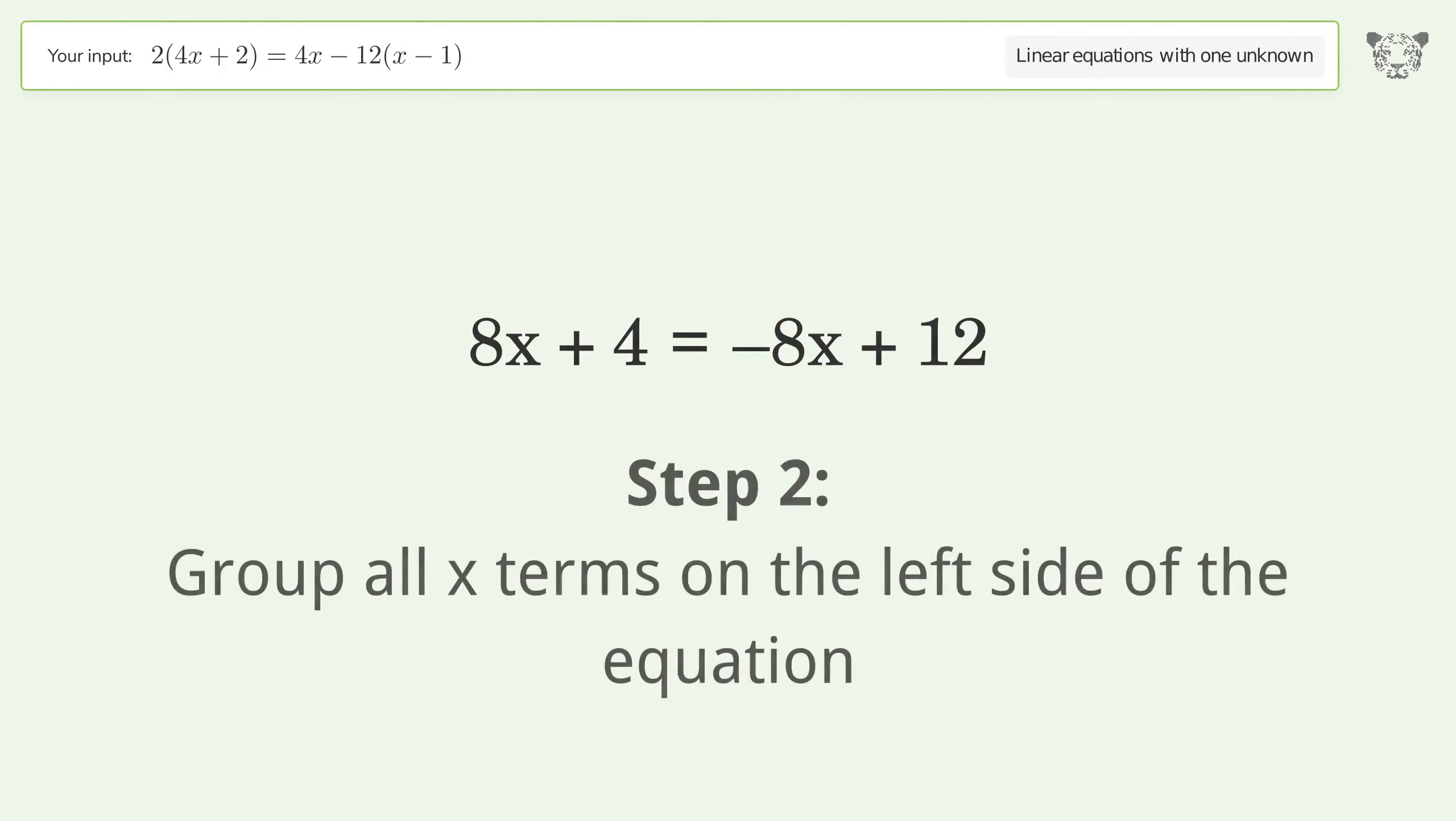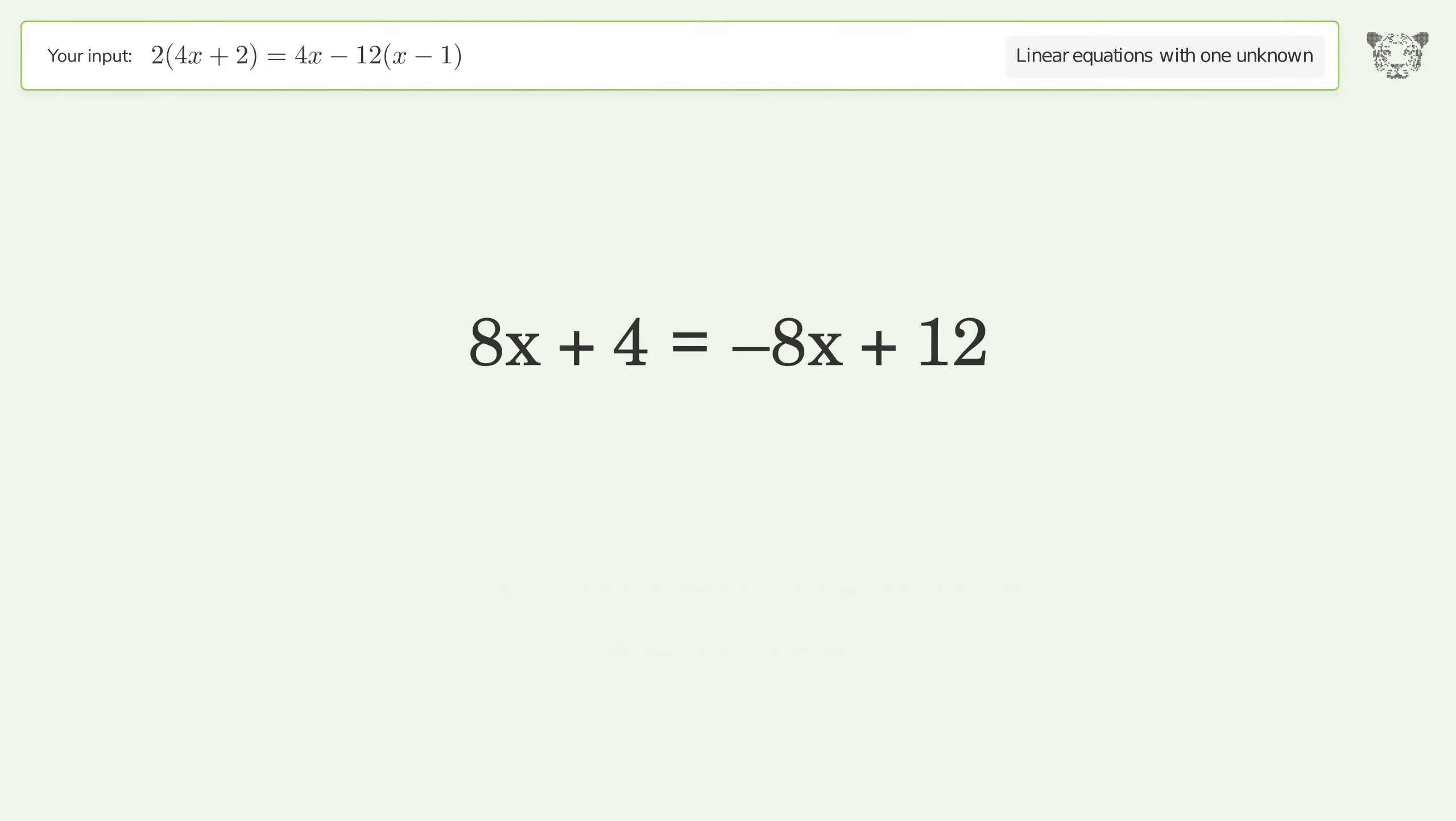Group all x terms on the left side of the equation. Add 8x to both sides. Group like terms. Simplify the arithmetic.